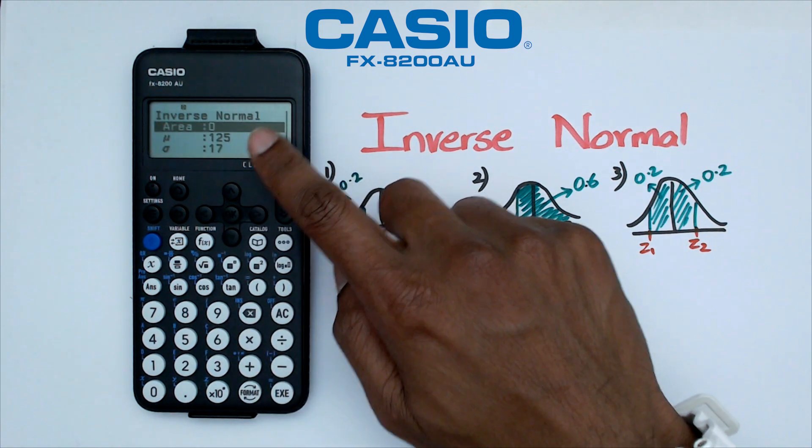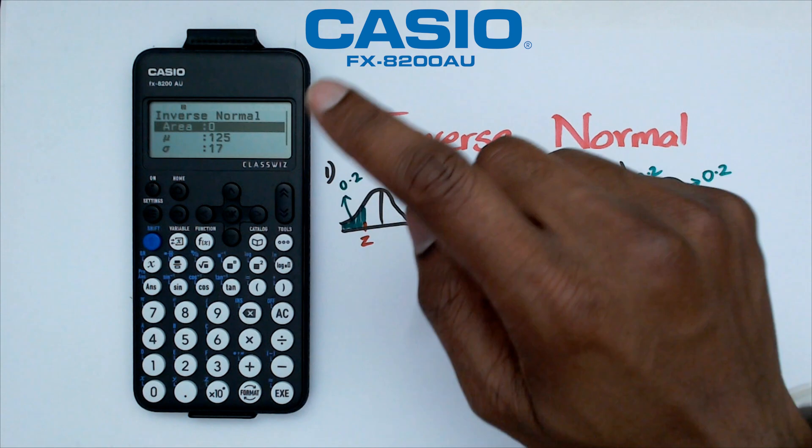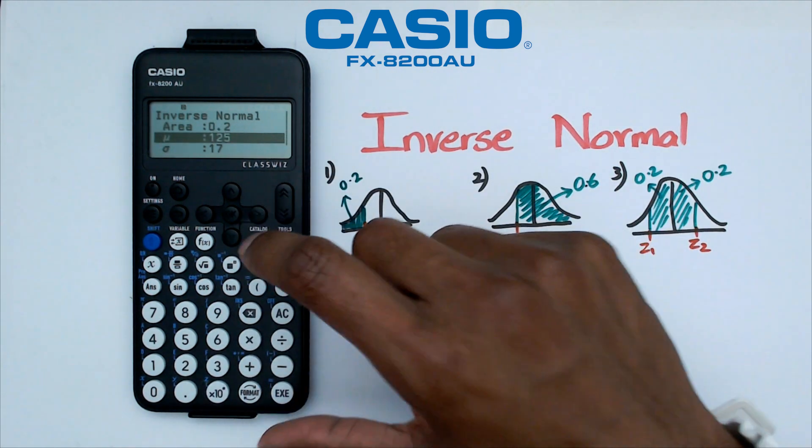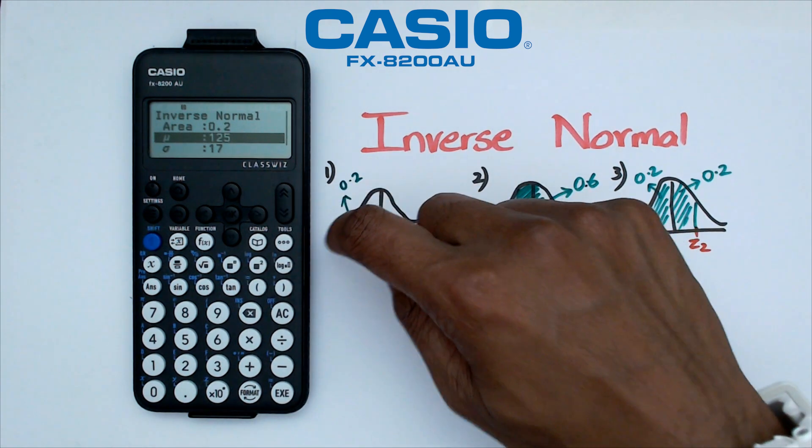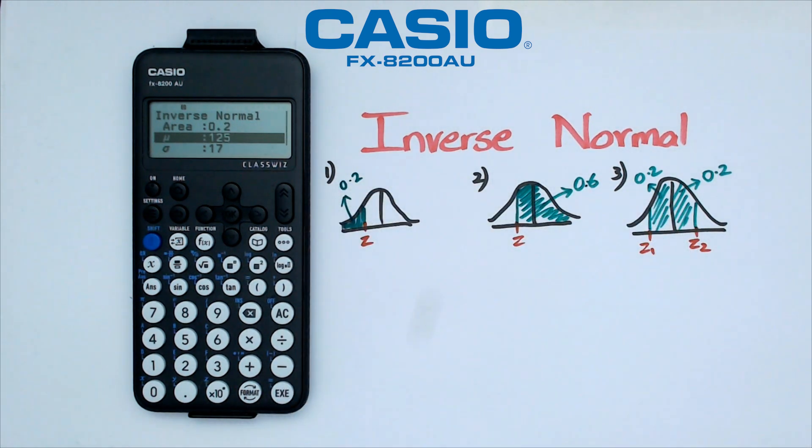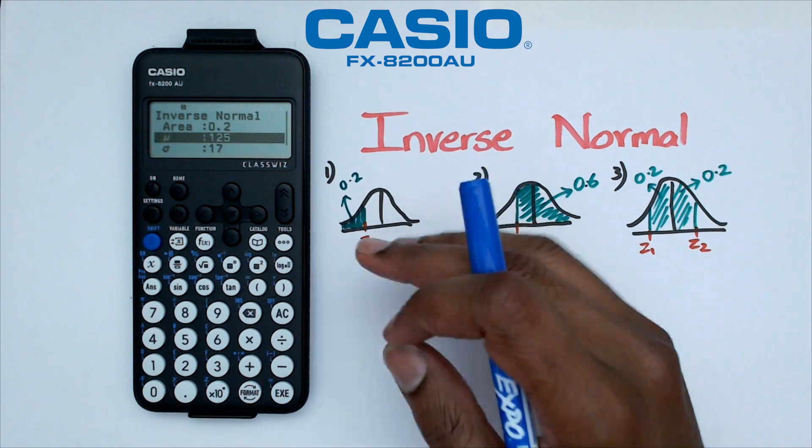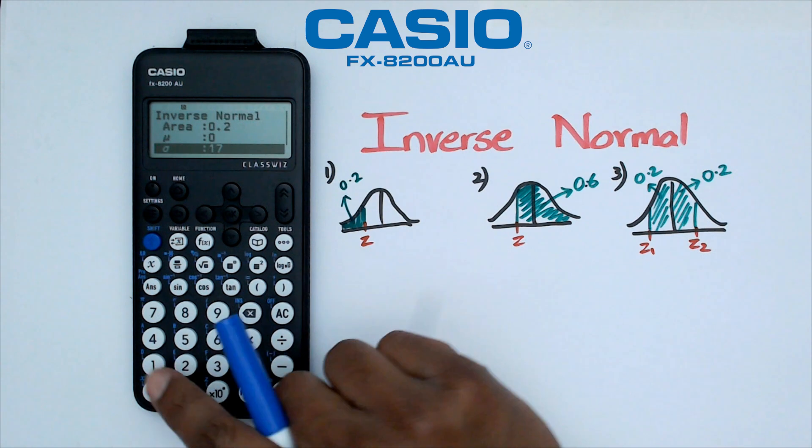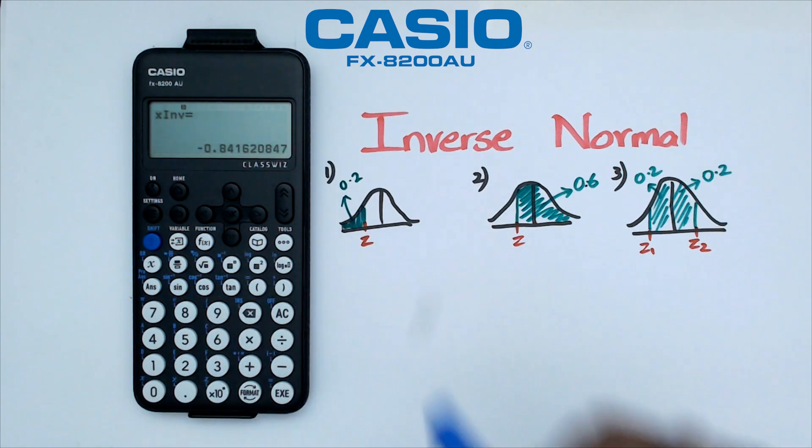Now what you'll have is the area and then you've got a mean and standard deviation to put in there. So we're going to put the area as 0.2. Now this is something that you need to know about this calculator, that it always is looking at the left area for the normal distribution curve. So that means question one is actually fairly simple because we just put that as 0.2. The mean as 0 and standard deviation as 1 and we should get a Z value of negative something.